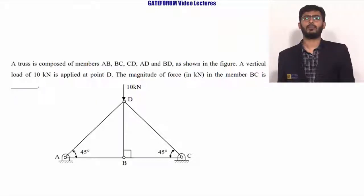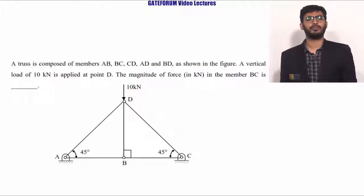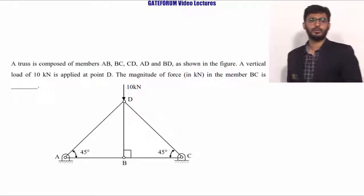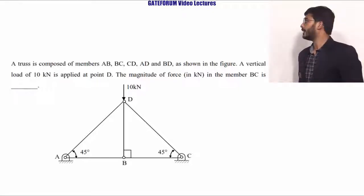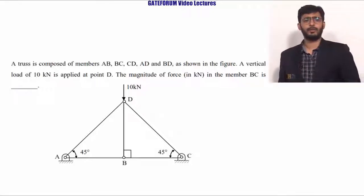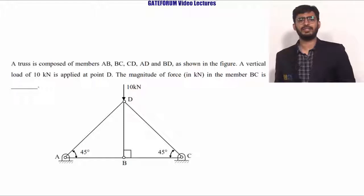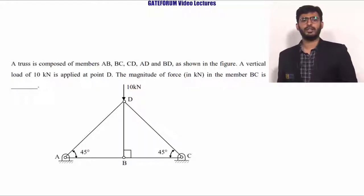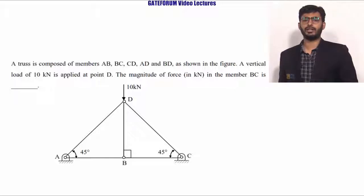This question belongs to engineering mechanics from statics — it is a problem from the truss topic and is a straightforward question. A truss is composed of members AB, BC, CD, AD, and BD as shown in figure. A vertical load of 10 kilo-newtons is applied at point D. The magnitude of force in kilo-newtons in member BC is required.